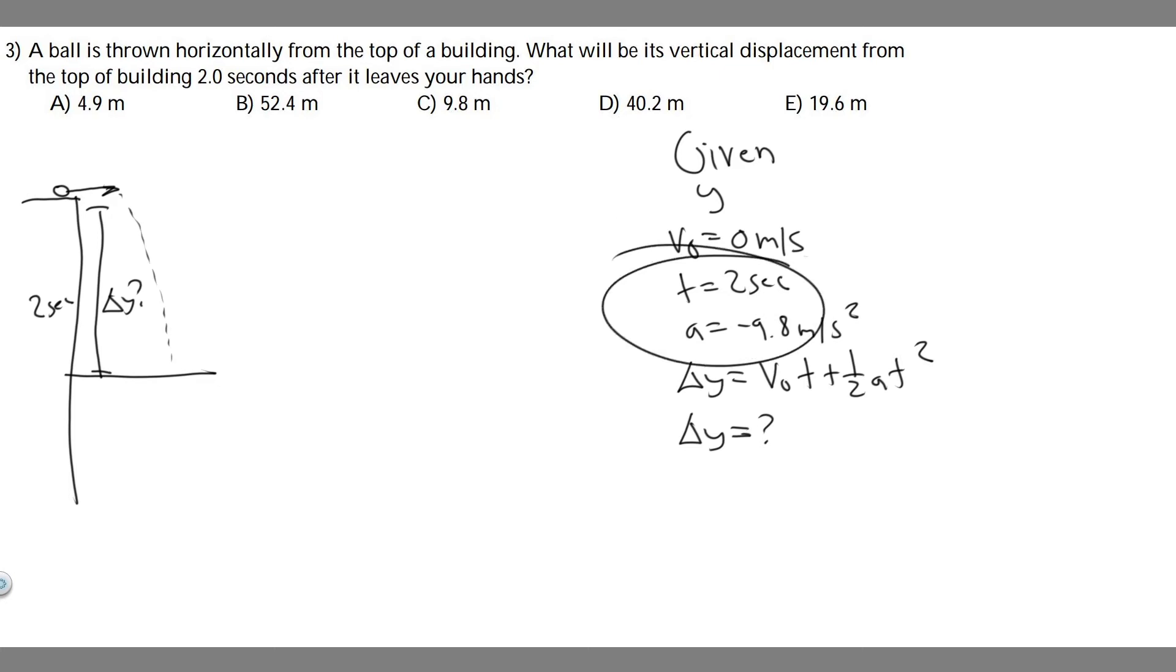And then the key thing in this problem is they say the ball is thrown horizontally, meaning if something's thrown horizontally, there's going to be no vertical velocity. So the initial velocity in the vertical direction is just 0. So we know v sub 0, y, and then we know t, and we know a.